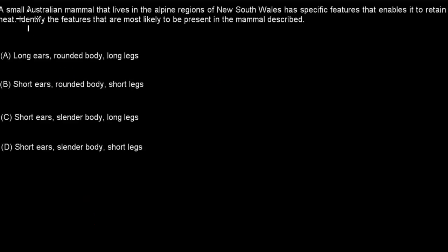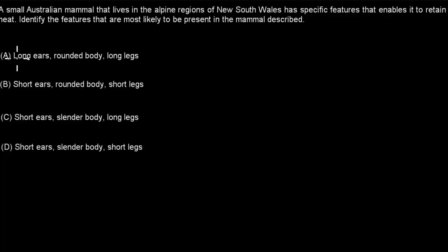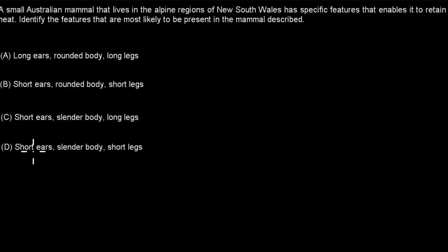The next question: A small Australian mammal that lives in the Alpine regions of New South Wales has specific features that enable it to retain heat. Identify the features most likely to be present in this mammal. A. Long ears, rounded body, and long legs. B. Short ears, rounded body, and short legs. C. Short ears, slender body, and long legs. Pause the video and attempt the question.